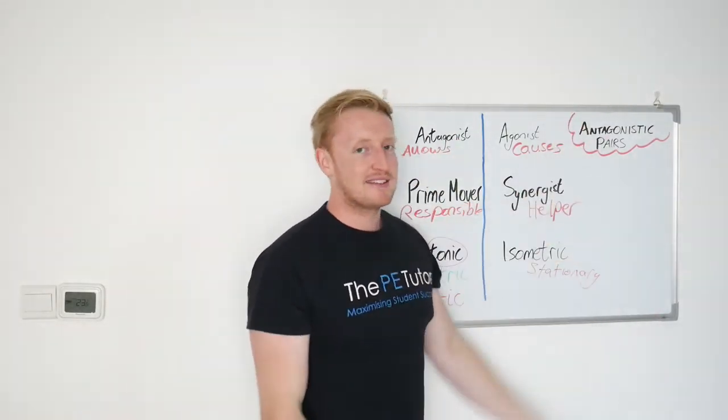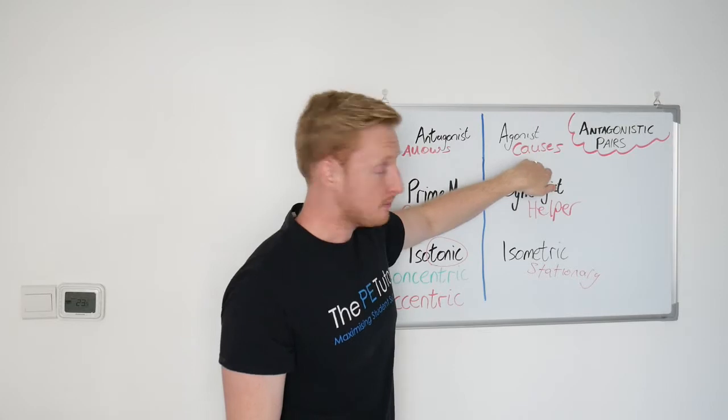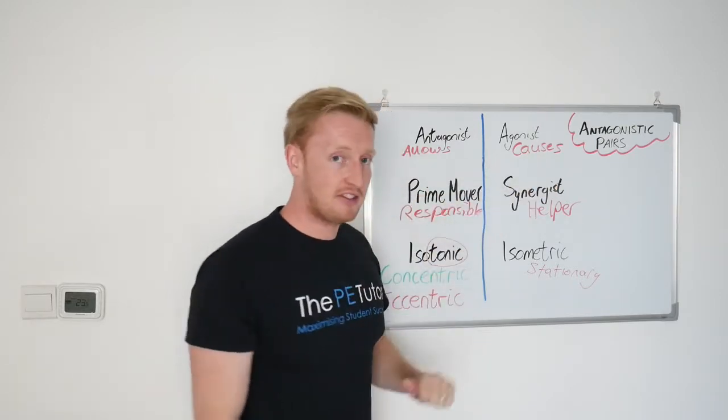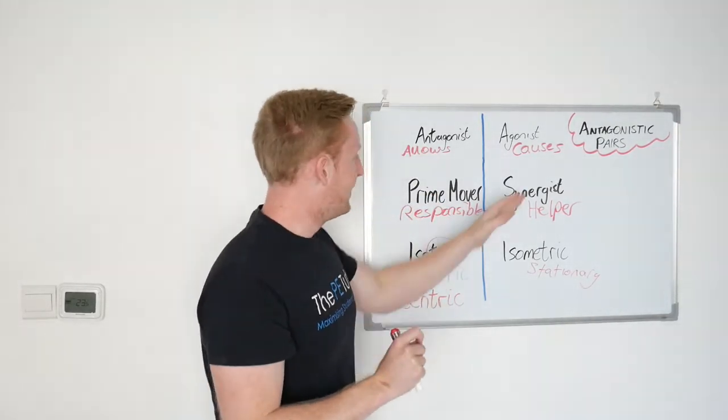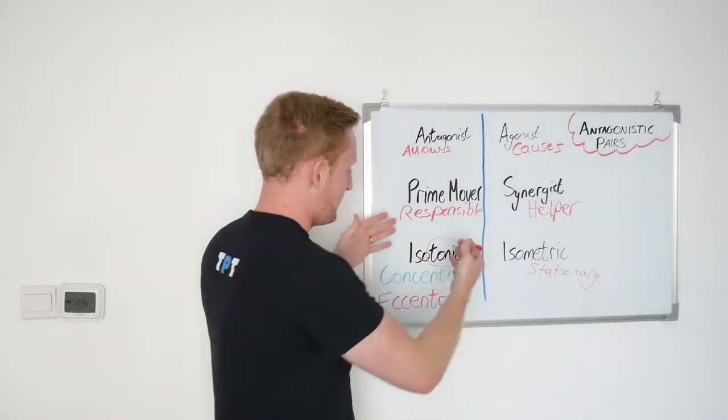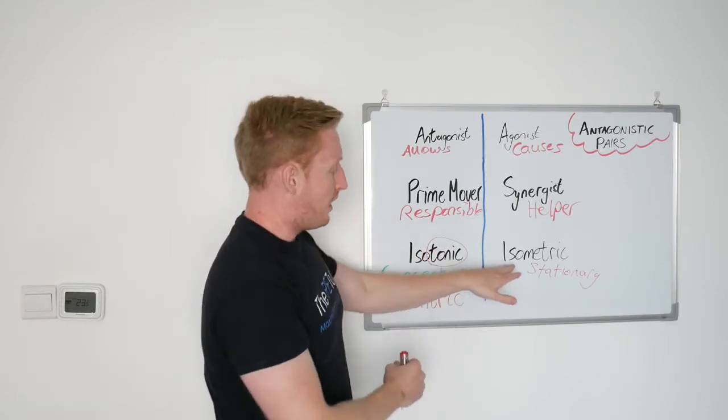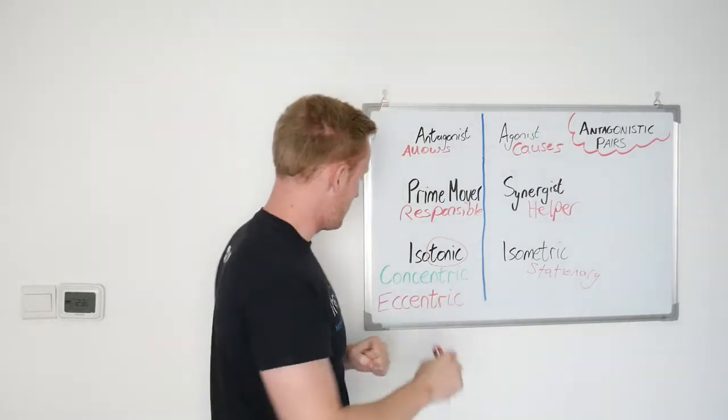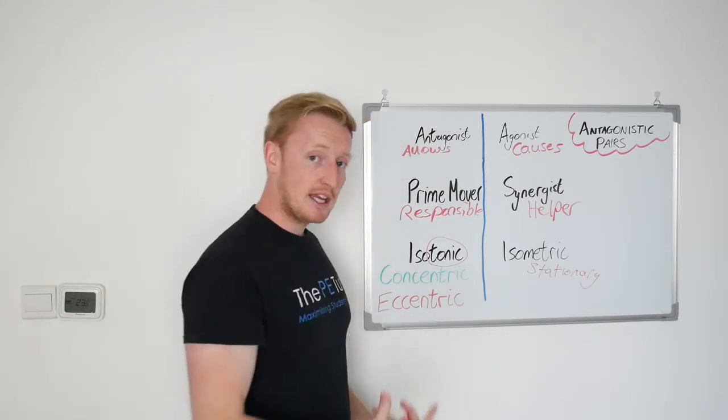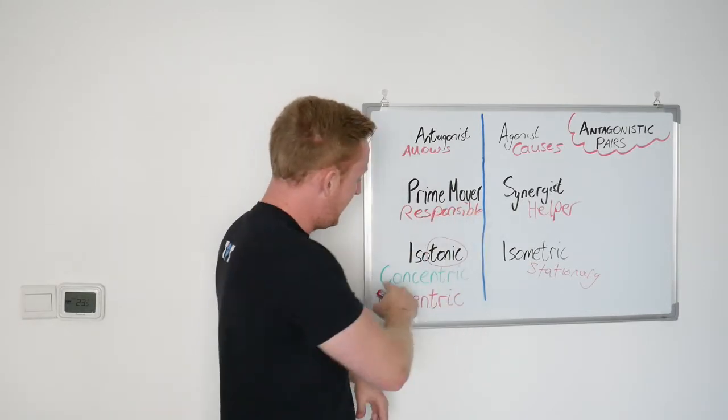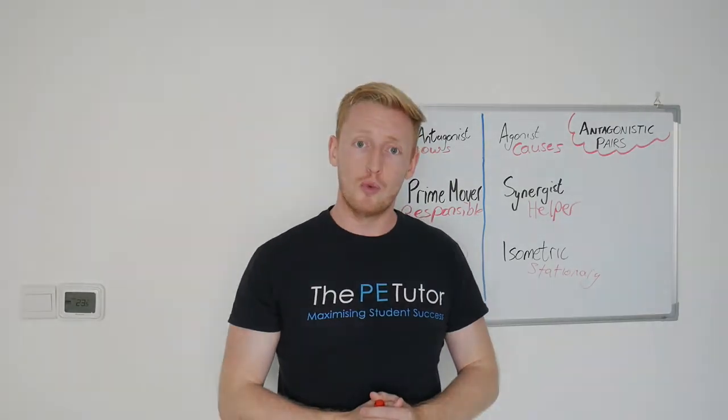And that is antagonistic pairs. Antagonist and agonist, one that allows the movement to happen, one that causes the movement to happen. The prime mover and the synergist, the prime mover's responsible for the movement action, they're the one most in control, and then the synergists are the little helpers. Then we've got muscle contractions, two different types, isotonic, think of tonic bubbles for movement. Isometric is when a muscle is stationary. And then within the movement contractions, we've got two types, the lengthening or the elongating eccentric type, or the coiling up shortening concentric types. And that's that. I hope you found that useful, and I hope to hear from or work with you very soon.